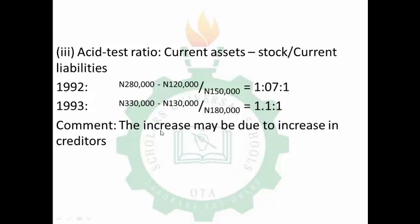For the acid test ratio: current assets minus stock, divided by current liabilities. In 1992: (280,000 minus 120,000) divided by 150,000 gives 1.07:1. In 1993 the ratio is 1.1:1. The increase from 1.07 to 1.1 may be due to the increase in creditors. These ratios demonstrate how we use financial metrics to determine the efficiency and performance of a business, rather than simply looking at account figures at face value.